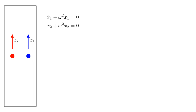Before doing that, let's introduce perturbation theory by looking at a classical system of two unit masses, each attached to a spring with spring constant omega squared. The blue mass has position x1, the red mass position x2, and the masses are constrained to move only in the vertical direction.